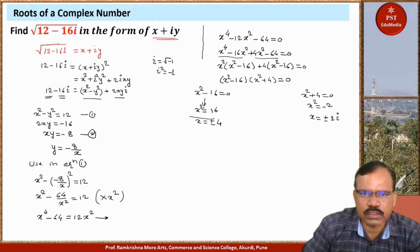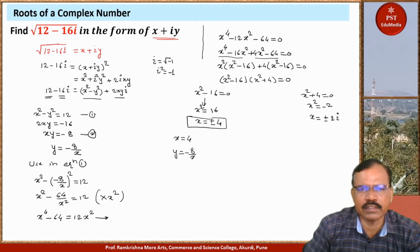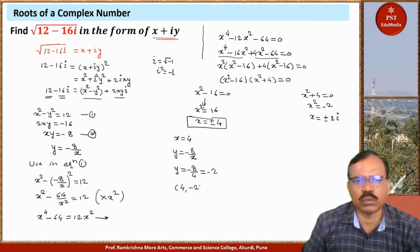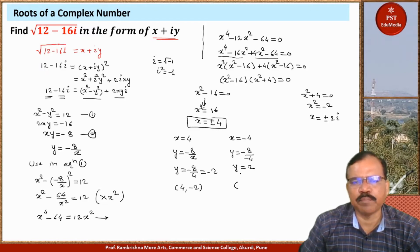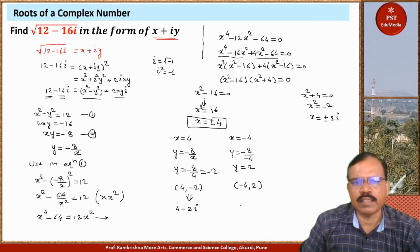Taking the real solutions first: if x equals 4, then y equals minus 8 divided by 4 equals minus 2, giving the pair (4, minus 2). If x equals minus 4, then y equals minus 8 divided by minus 4 equals 2, giving the pair (minus 4, 2). So our complex numbers are x plus iy equals 4 minus 2i and minus 4 plus 2i.